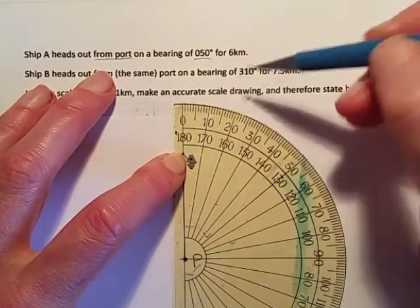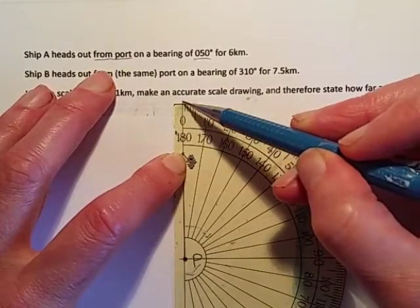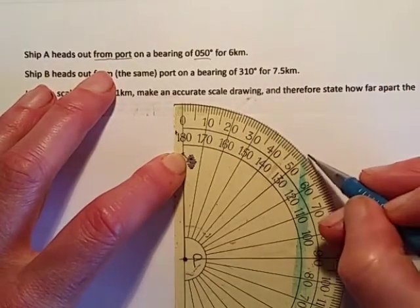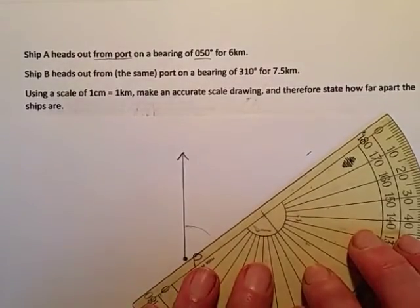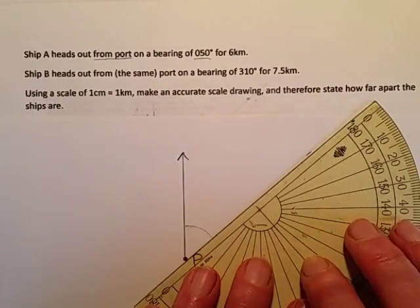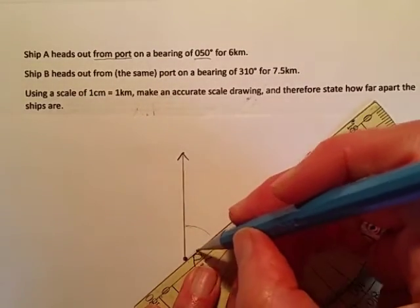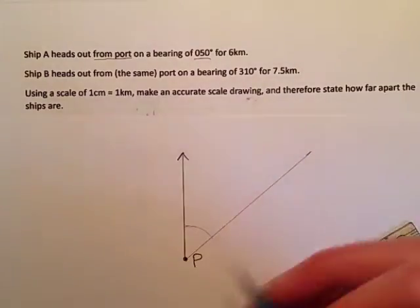Make sure you're using the correct scale. We want to start at zero so we're going to go zero to around 50. Now that gives us the direction that ship A is travelling in. I'm going to mark that quite lightly for now because that's the direction.